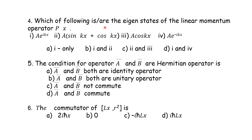Question 4: Which of the following are eigenstates of the linear momentum operator Px? The operator is Px = iℏ(d/dx). We calculate for each option to determine which are eigenstates. The correct answer is options 1 and 4.